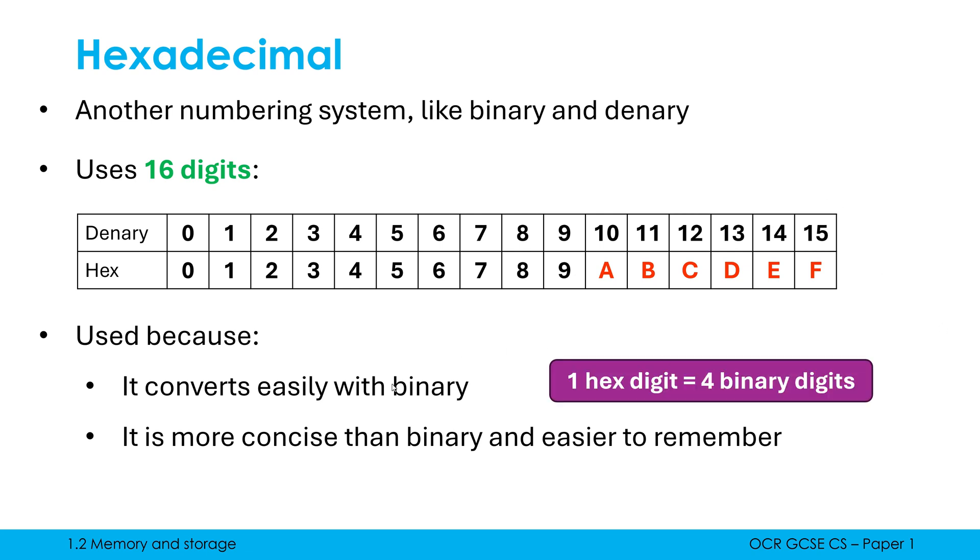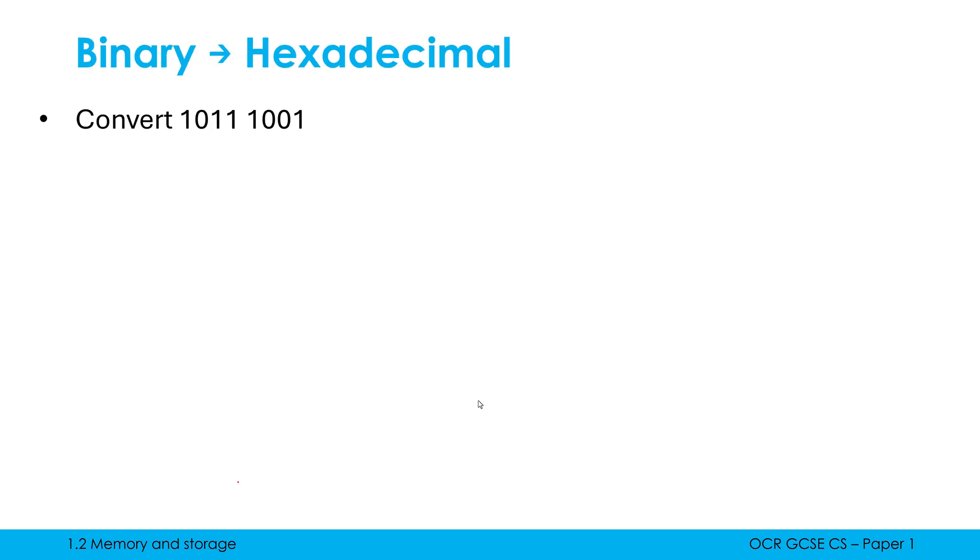And the key reason why both of these statements are true is because one hexadecimal digit is equivalent to four binary digits. So for every four binary digits, every four bits, I can represent that with one hexadecimal digit which is why hex is more concise. And this relationship makes it easier to convert. So let's have a look at some examples of this.